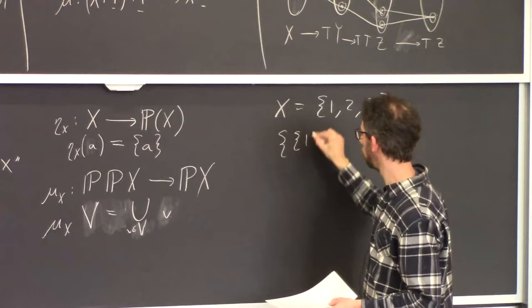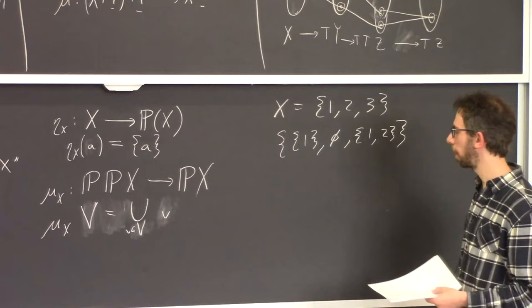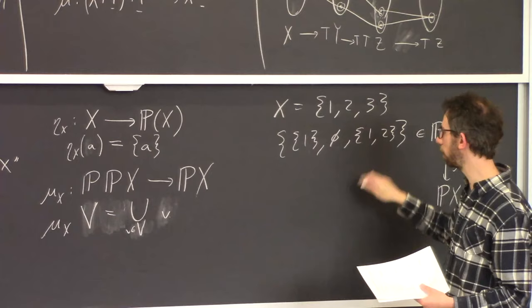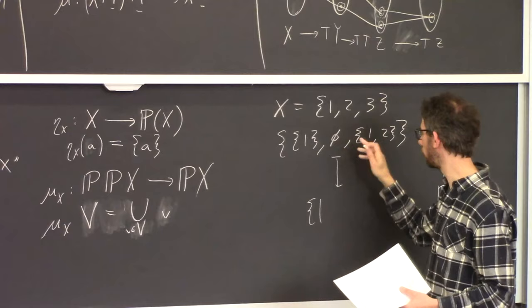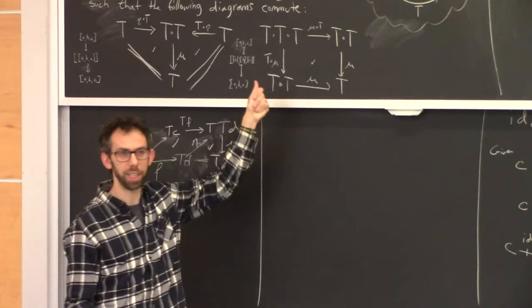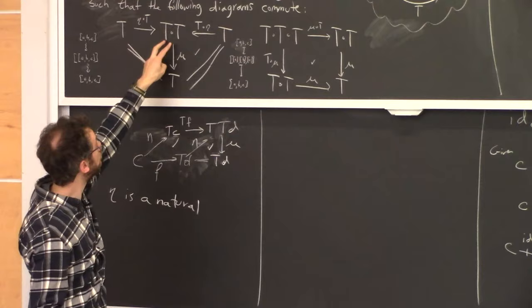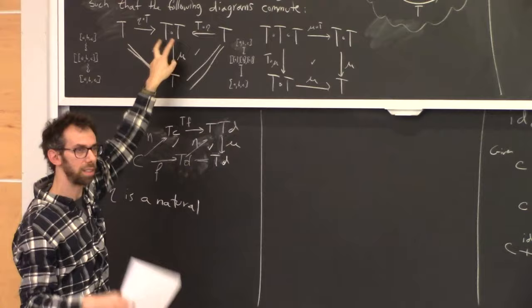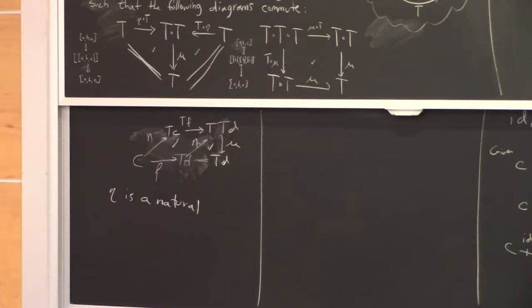You can check the monad laws hold: if you take a set like {A,B} and turn it into the set of singletons {{A},{B}} and union, or turn it into {{A,B}} and union, either way you get {A,B} back. The reason intersection wouldn't work is that this law would fail. So the join for the power set monad is the union operation.